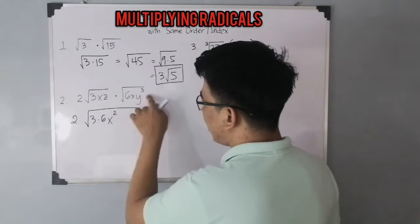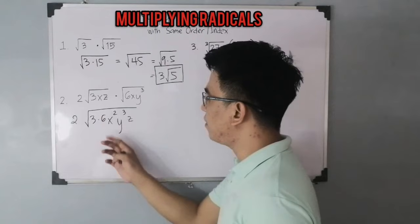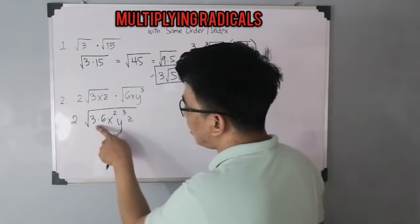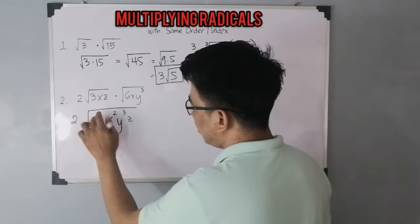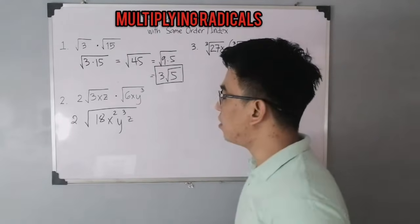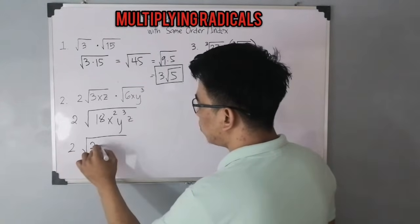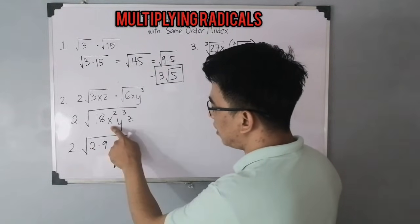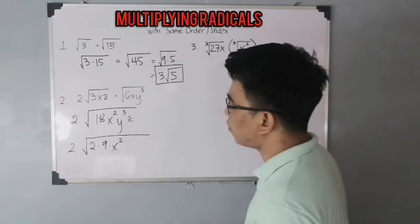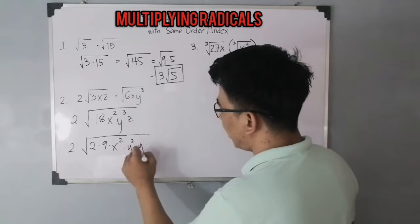For the y variable, you have y cubed, and then the z variable. So we have the expression 2 times the square root of 18x²y³z. We can factor out 18 as 2 times 9. 9 is a perfect square, and x squared is a perfect square. For y cubed, we can factor it as y squared times y, since y squared is inside y cubed.